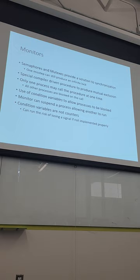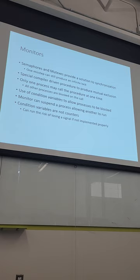With compiler-driven mutual exclusion, only one process can make the call at a time; everything else is blocked. You use condition variables that allow things to be blocked — they're not necessarily counters but conditions. You can still have a problem if you don't implement properly and lose signals. The idea is simply to encapsulate all that code.